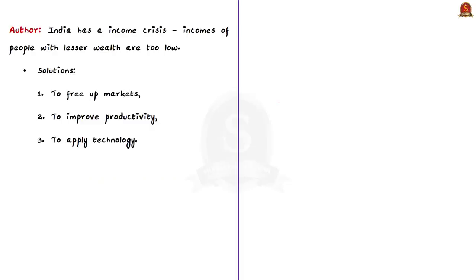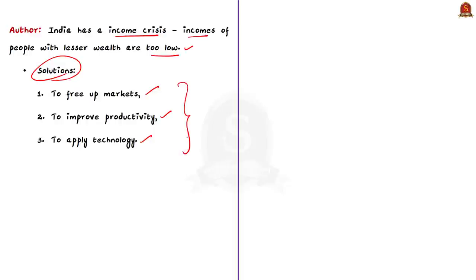The author begins this editorial by stating that India has an income crisis — the incomes of people who have lesser wealth are too low. To come out of this crisis, economists propose three solutions: one is to free up markets, the second is to improve productivity, and the third is to apply technology. The author examines all three solutions to see whether they would help in solving the problem of income crisis.